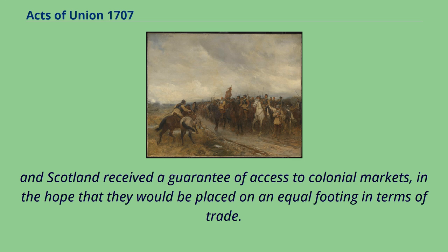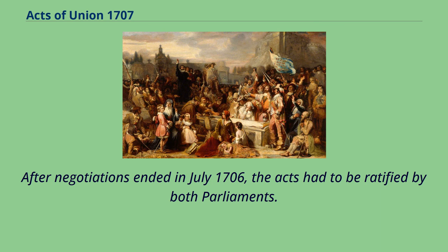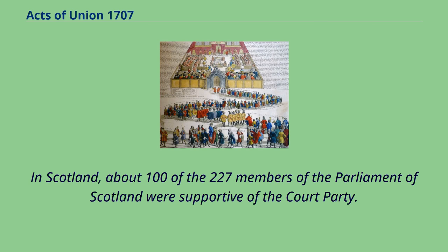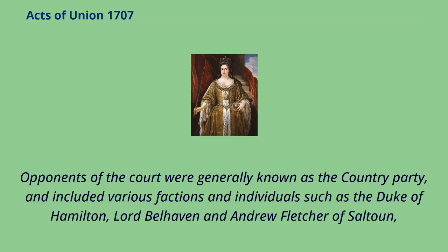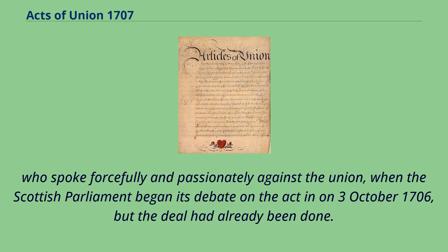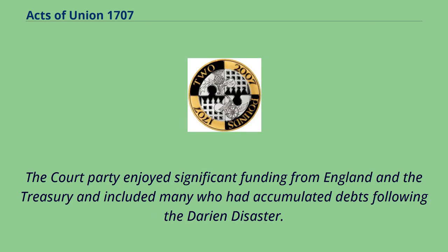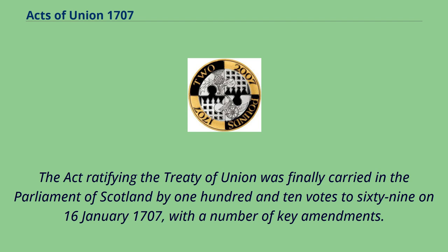After negotiations ended in July 1706, the acts had to be ratified by both parliaments. In Scotland, about 100 of the 227 members of the Parliament of Scotland were supportive of the court party. For extra votes, the pro-court side could rely on about 25 members of the squadrone volante, led by the Marquess of Montrose and the Duke of Roxburgh. Opponents were generally known as the country party, and included various factions and individuals such as the Duke of Hamilton, Lord Belhaven, and Andrew Fletcher of Saltoun, who spoke forcefully against the Union when the Scottish Parliament began its debate on October 3, 1706. The Act ratifying the Treaty of Union was finally carried in the Parliament of Scotland by 110 votes to 69 on January 16, 1707, with a number of key amendments.